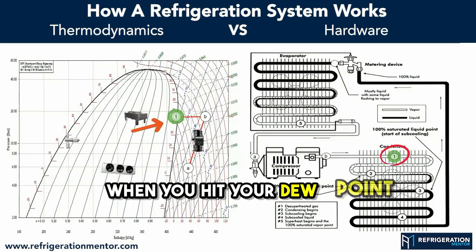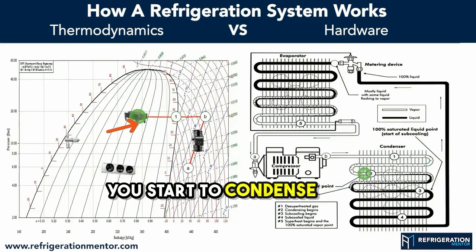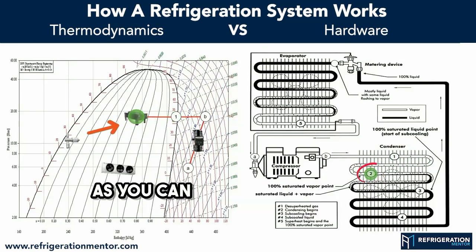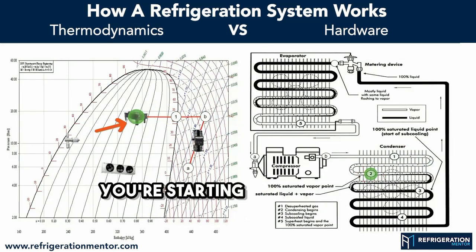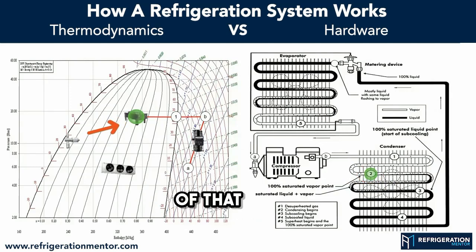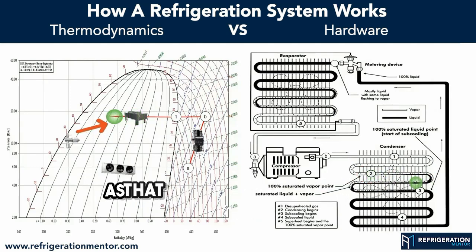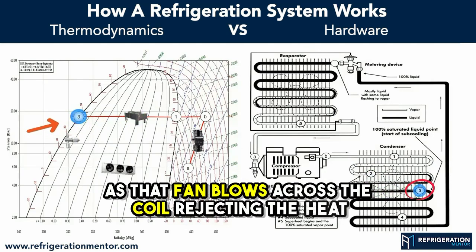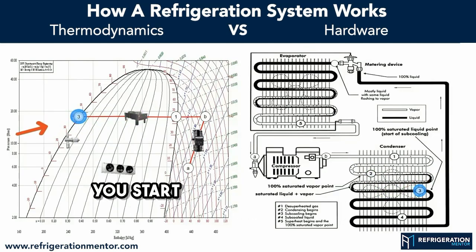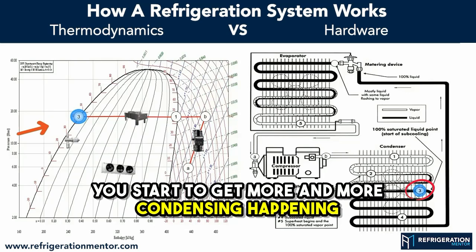When you hit your dew point, this is when you start to condense inside the enthalpy diagram. As you can see, at point 2, that's where the condensing starts. You're starting to drop liquid out of that refrigerant vapor. As that fan blows across the coil, rejecting the heat, you start to get more and more condensing happening.